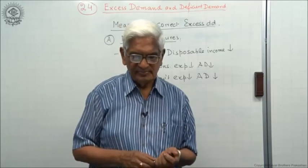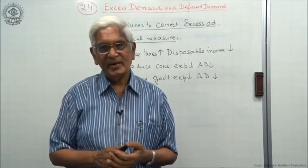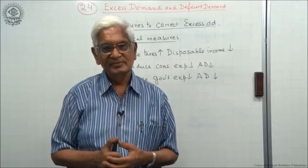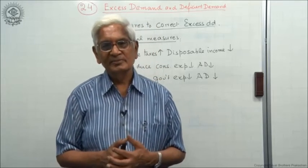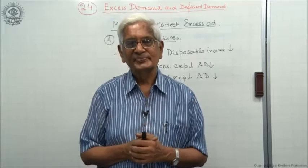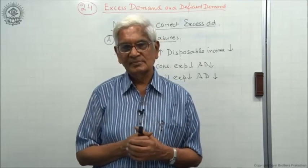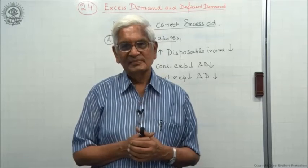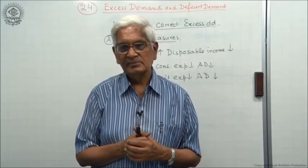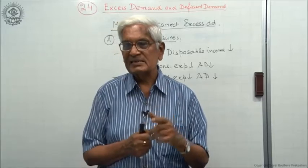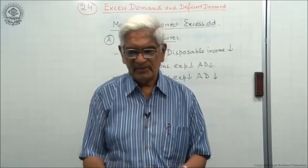So these are the two fiscal measures: taxes and government expenditure. One important point about taxes: if the government collects tax from people but spends it itself, it will have no effect. Taxes will be effective only when the government collects but does not spend. So anyway, these are some of the limitations.